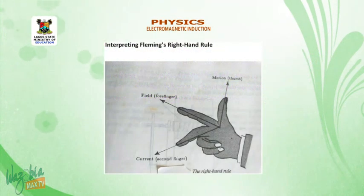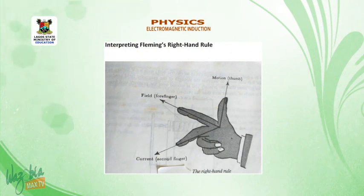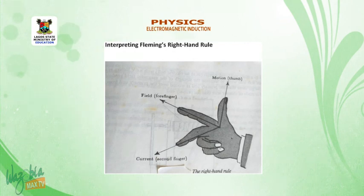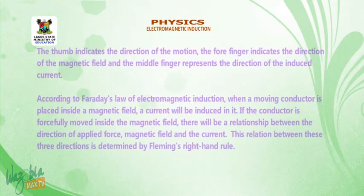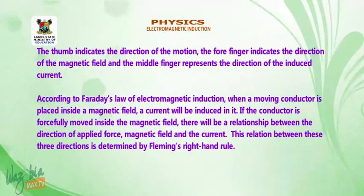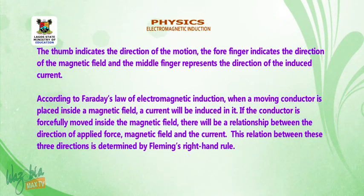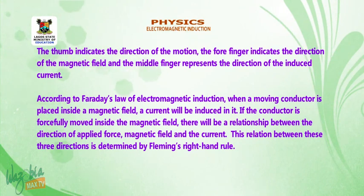Interpreting Fleming's right-hand rule. Consider the diagram below. The thumb indicates the direction of the motion, the forefinger indicates the direction of the magnetic field, and the middle finger represents the direction of the induced current.